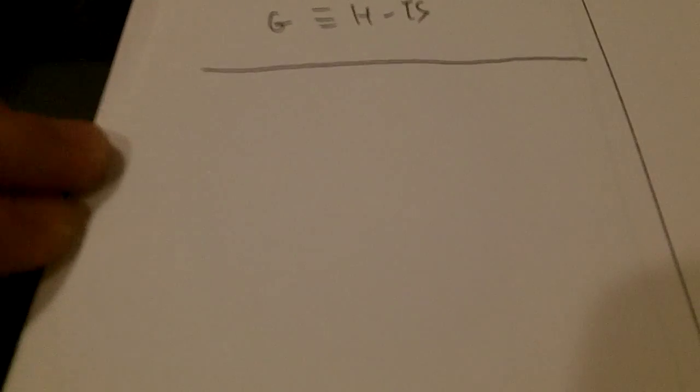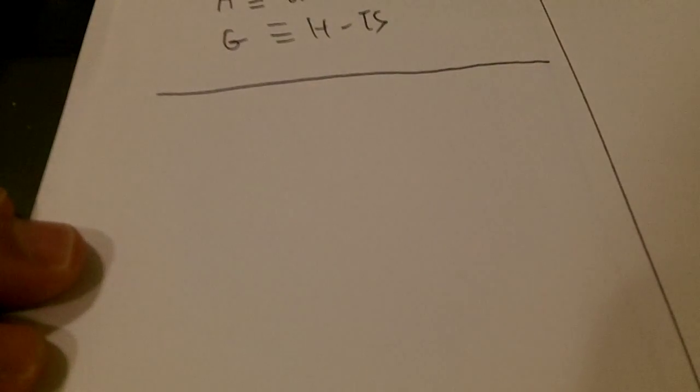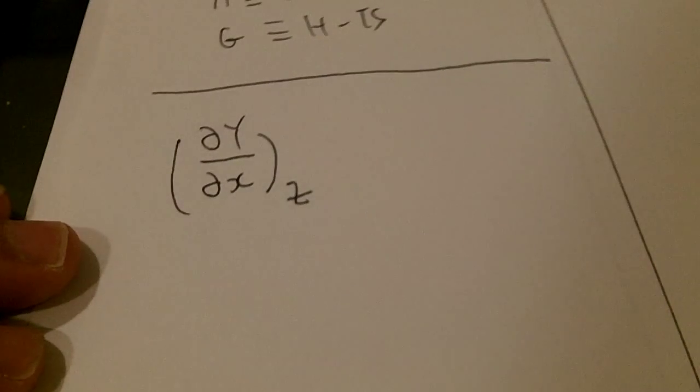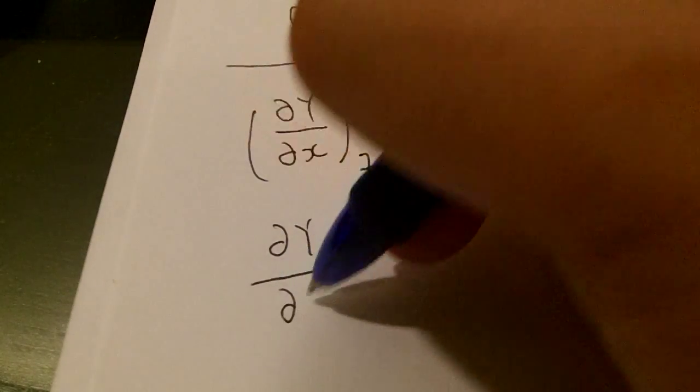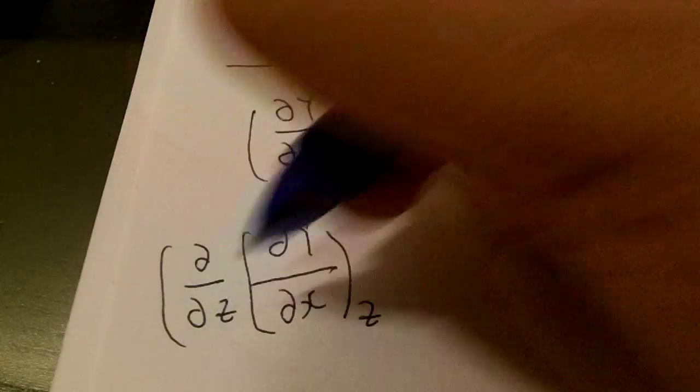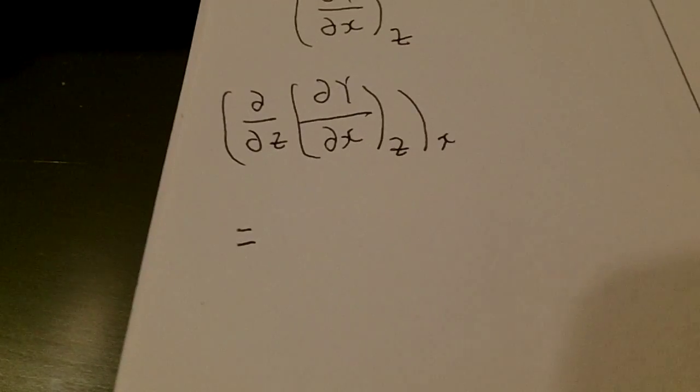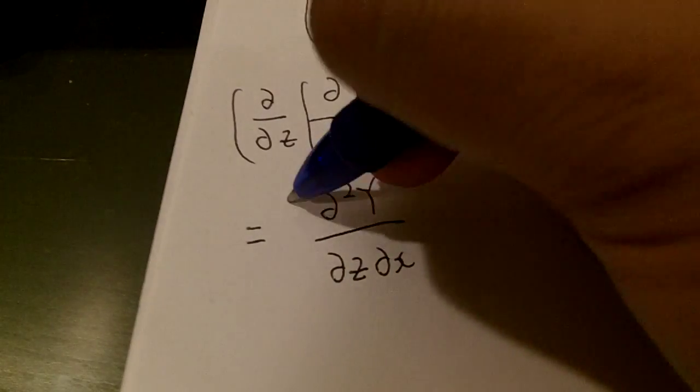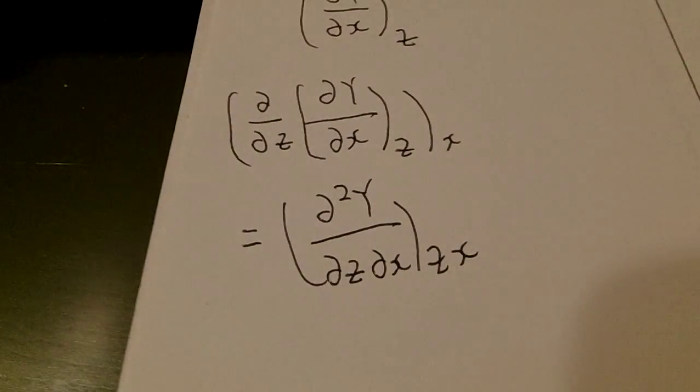We want to know certain properties about partial differentials. Let's say you have del y del x, holding z constant, and you want to differentiate it with respect to z, holding x constant. Let's just differentiate this. And this is actually just equals to del squared y del z del x, del x del x.